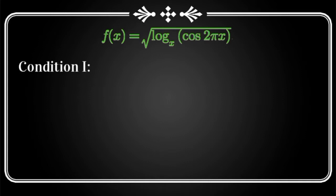Now the first necessary condition will be that whatever is under the root shall be either positive or equal to 0. So I have written log of cos 2πx to the base x to be greater than or equal to 0. Now we notice that our variable is in the base too, so our base is also varying.